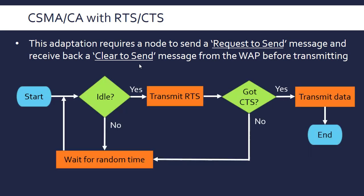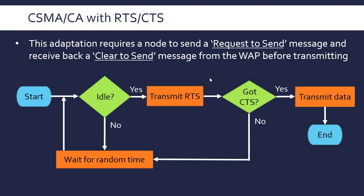Looking at this in the flowchart, the core protocol remains the same underneath. But once the channel is determined to be clear, instead of immediately transmitting, we first send an RTS to request access and double-check. If a CTS comes back, we transmit. If it doesn't, we wait for a random amount of time and start the process again.